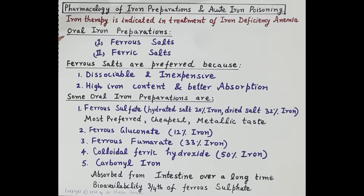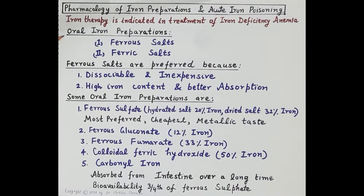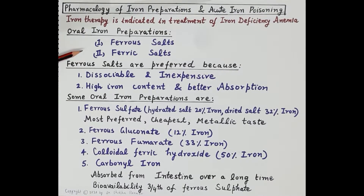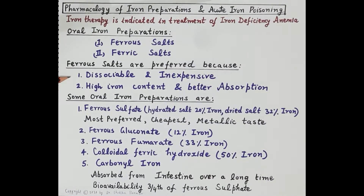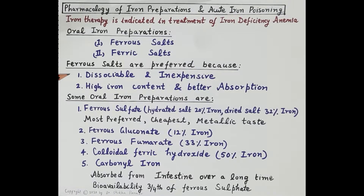The oral route is the preferred route of iron administration. Oral iron preparations are of two types: ferrous salts and ferric salts. Ferrous salts are preferred over ferric salts because they are dissociable and therefore easily absorbable in the intestinal mucosa. They are also inexpensive, possess higher iron content, and are better absorbed.